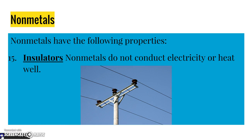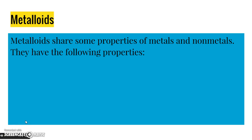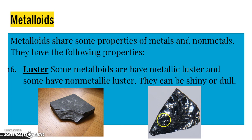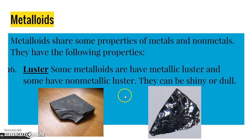Now let's talk about metalloids. They share some properties of metals and non-metals. For luster, some metalloids have metallic luster and some have non-metallic luster — that could be shiny or dull. Here's an example of a metalloid and here's another: this one is dull and this one is shiny. Sometimes the element has some of both properties. So luster for metalloids is either shiny or dull. This is number 16.